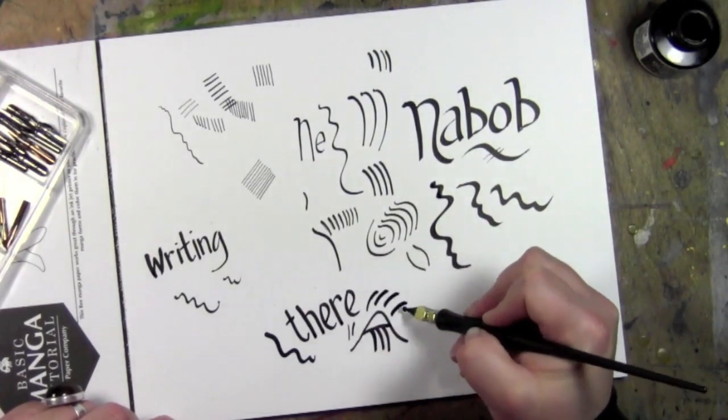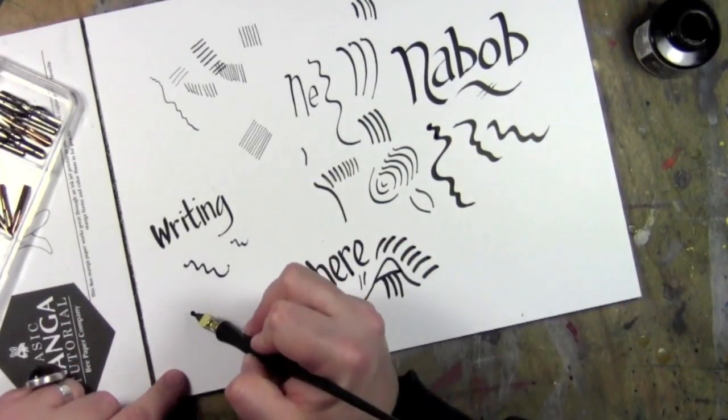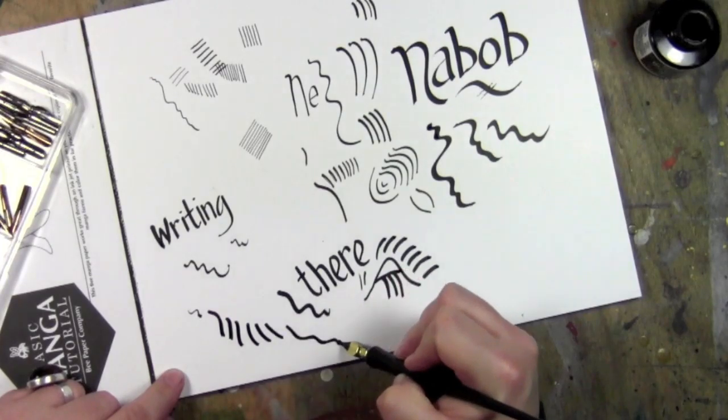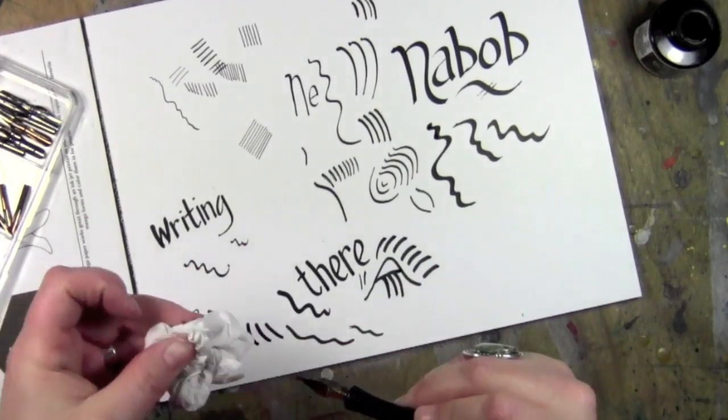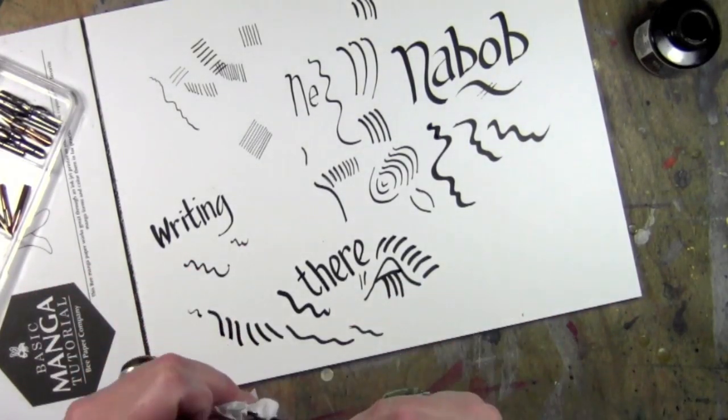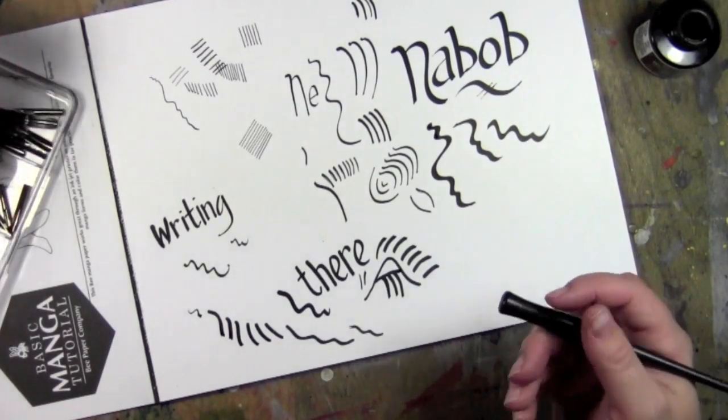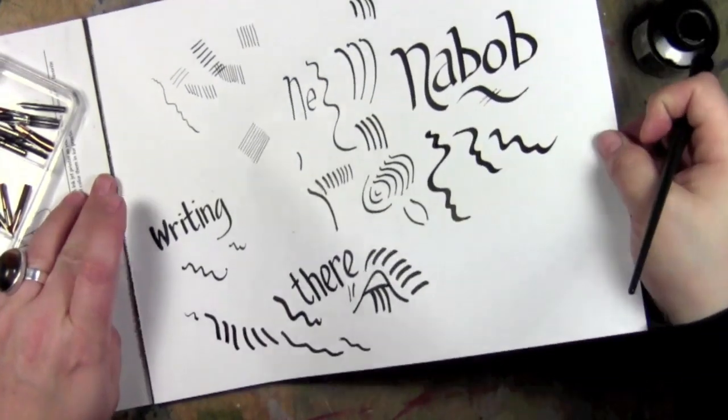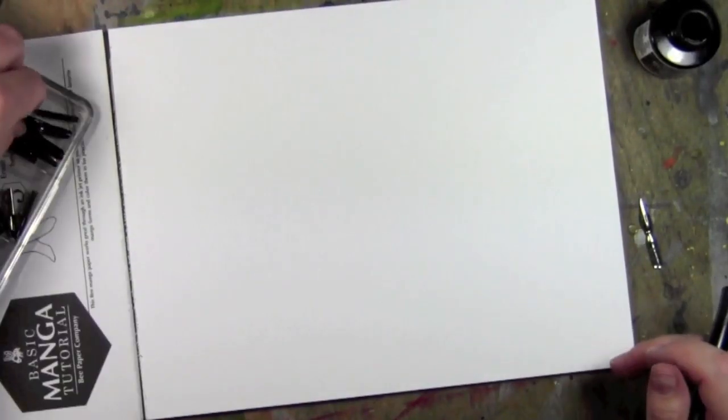It's actually kind of replicating a big fat felt tip marker. That's what this feels like, it's like a Sharpie. I had to try it again. So that's the Speedballs, the basic range. There's a lot of these.